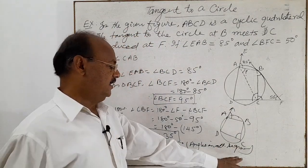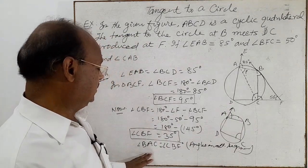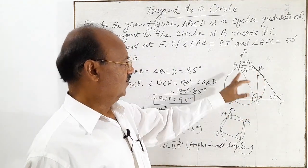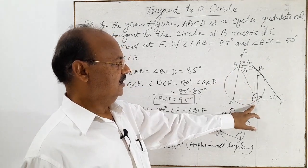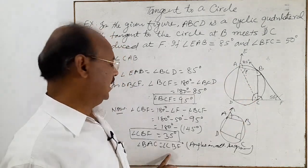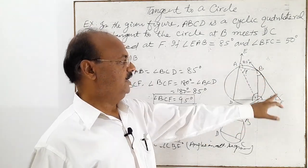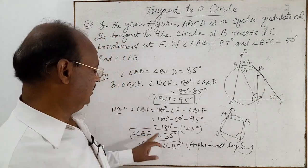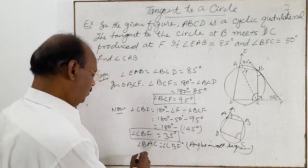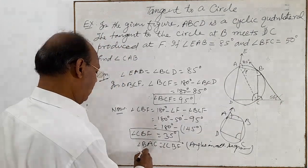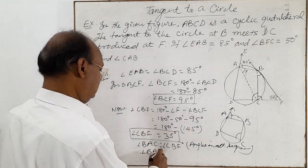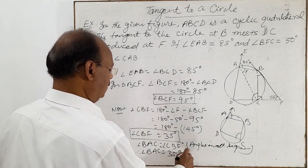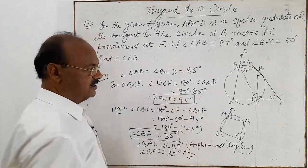By the alternate segment property, angle BAC is equal to angle CBF. We have already calculated angle CBF as 35 degrees, so therefore angle BAC is 35 degrees. This is the answer.